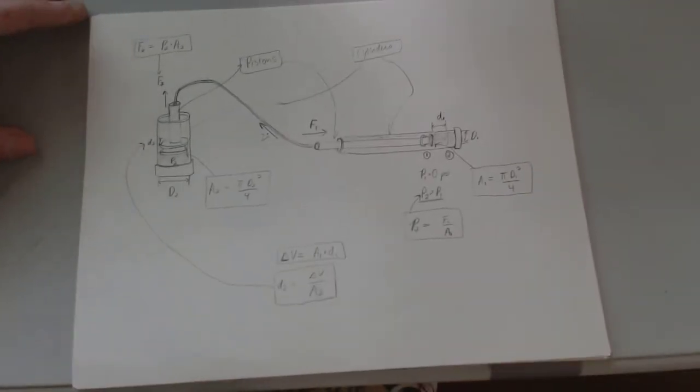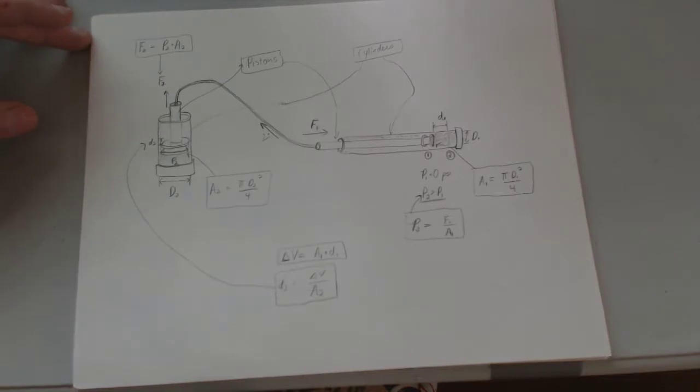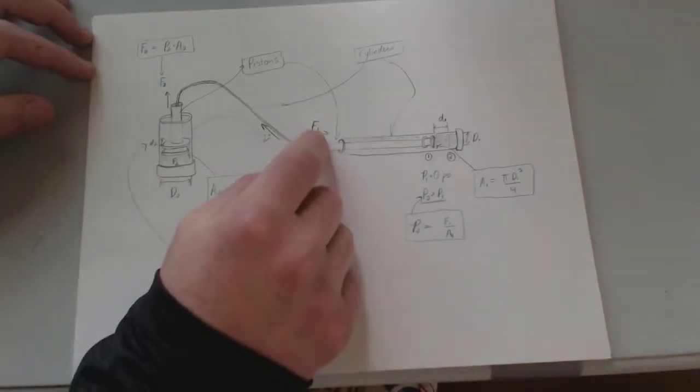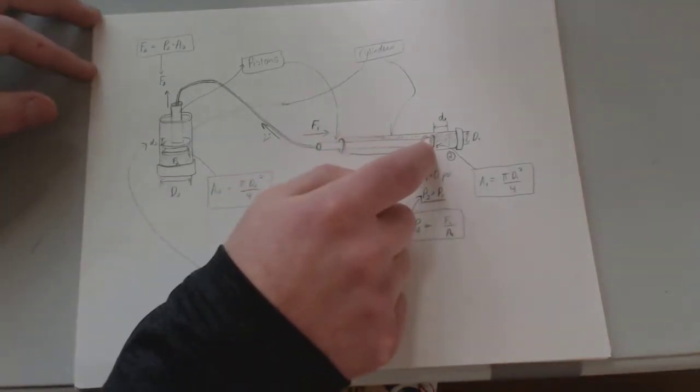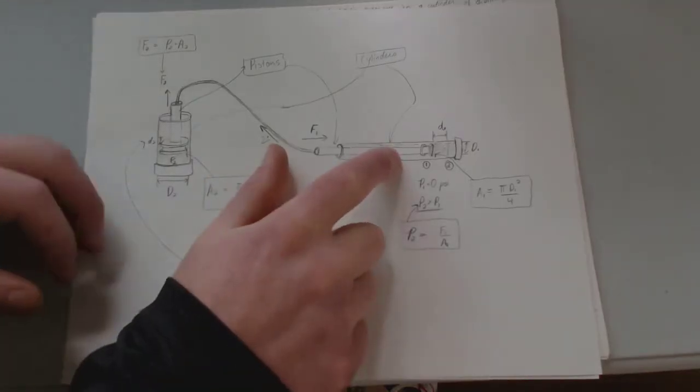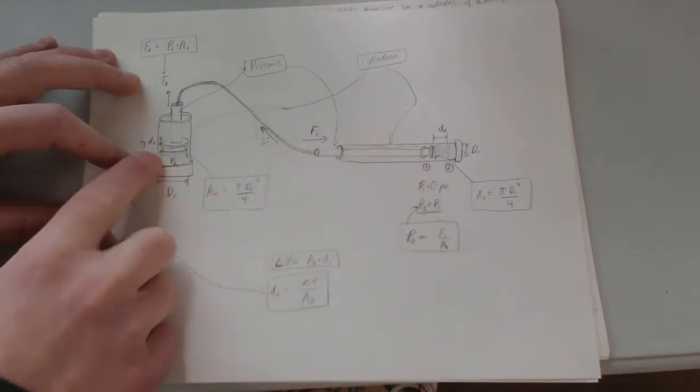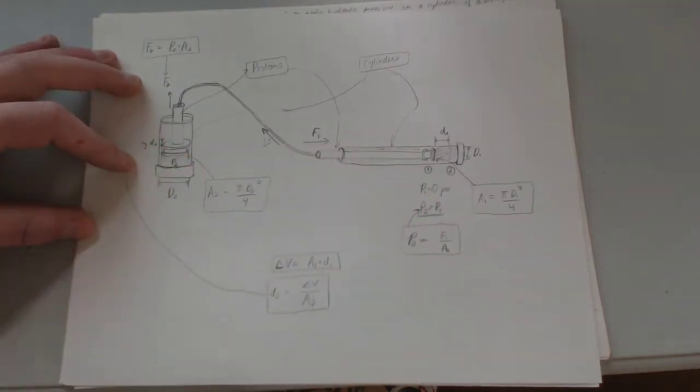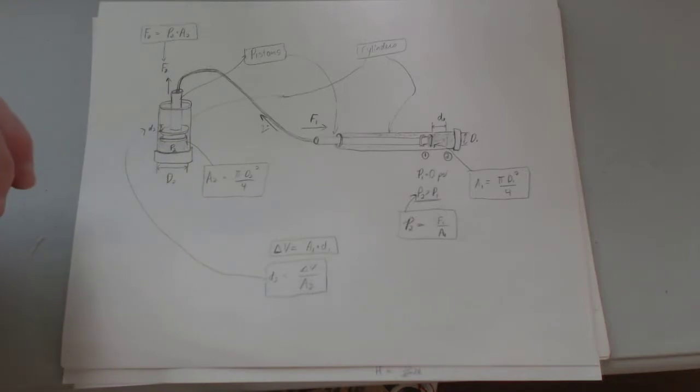Because pressure is equal to force divided by area, if you apply a force on a smaller area piston, you create a larger amount of pressure. Essentially you're working with a ratio of areas that is going to allow us to transfer the amount of force we have and amplify it in some way.